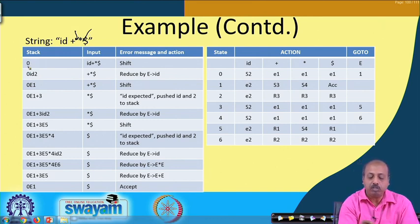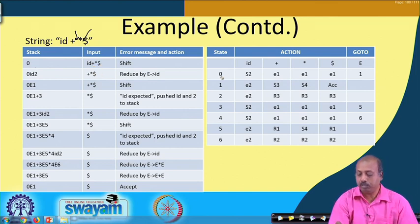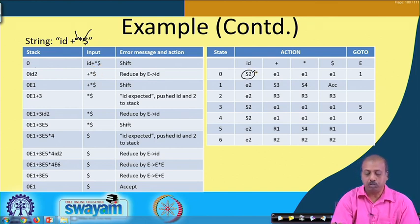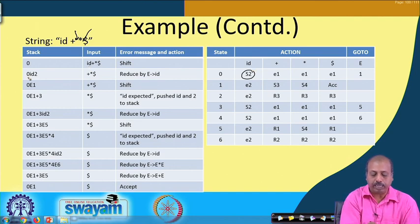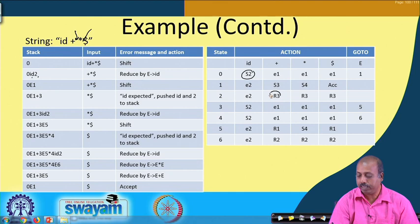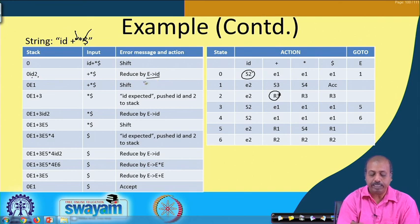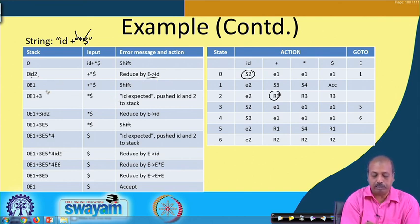Initially the stack contains state 0 and the input contains 'id plus star dollar'. State 0 with id says shift 2, so it will shift id into the stack and the new state 2 is also pushed. Now state 2 with plus says reduce by rule number 3, so it will reduce by the rule E producing id and the new state will come.